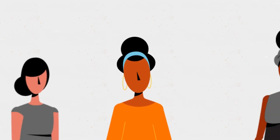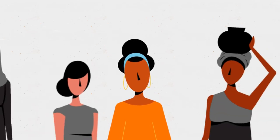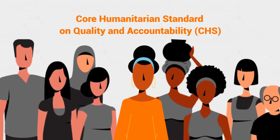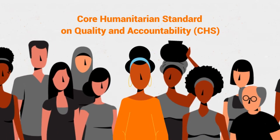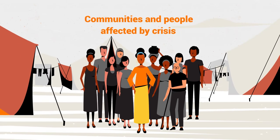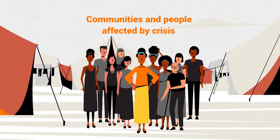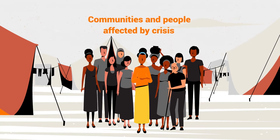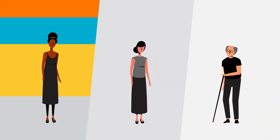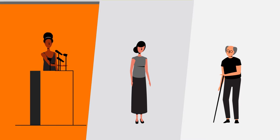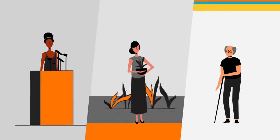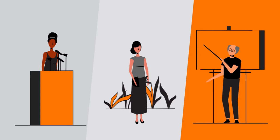We all know that community participation is key in humanitarian response. The core humanitarian standard on quality and accountability places communities and people affected by crisis at the centre of humanitarian action. Participation of diverse groups from the affected population in making decisions about humanitarian assistance will make sure the different needs of the various groups are met.